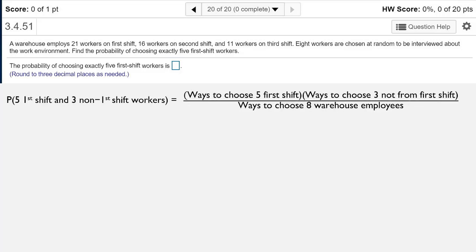So the way that this fraction is going to look for our probability is the number of ways to choose the five workers that are on the first shift times the number of ways to choose the three that are not from the first shift. That's a direct result of the fundamental counting principle that says if you can do event A in M different ways and event B in N different ways, then the number of ways that you can do event A then B is M times N.